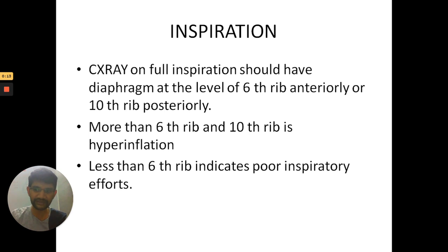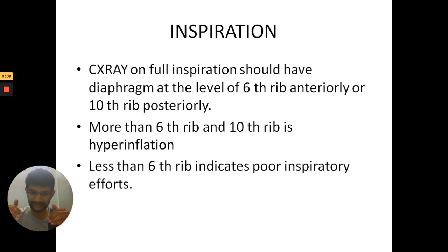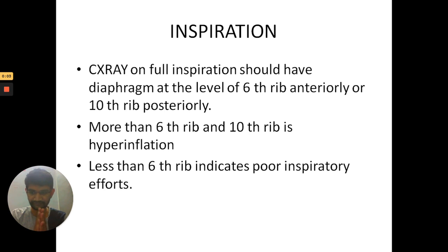If more than 6 ribs are visible anteriorly and more than 10 posteriorly, it indicates overinflation as seen in COPD. If less than 6 ribs are visible anteriorly, it is a poor inspiratory film. That is the systematic reading of the chest X-ray.